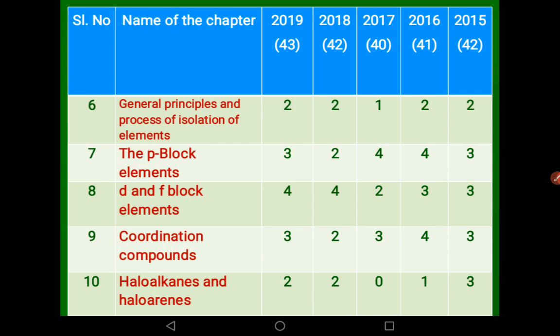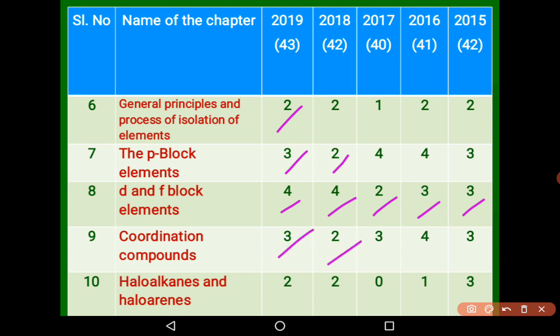General Principles and Processes of Isolation of Elements had 2 marks from 2019, then 2 marks and 3 marks in earlier years. Haloalkanes and Haloarenes is a second-preference chapter — 2 marks from 2019, 2 marks from 2018, 0 in 2017, 1 in 2016, and 3 in 2015.